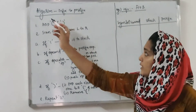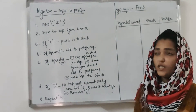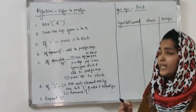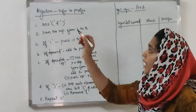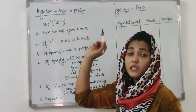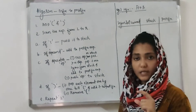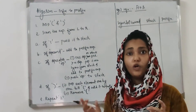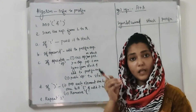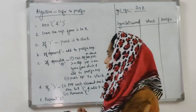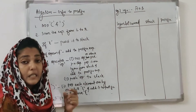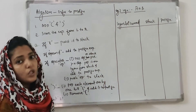Now let's look at the algorithm to convert an infix expression to postfix expression using a stack. Step 1: add a left parenthesis and a right parenthesis to both ends of the given expression. Step 2: scan the expression from left to right. While scanning, if a left parenthesis is encountered, push it to the stack.